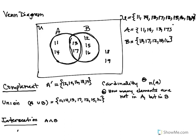Then we have intersection. A intersect B means tell me what they share — what they have in common. Intersection is the 'and' of them, union is the 'or' of them, and complement is the 'not' of them. So 'and' means must be in both — what are they sharing? They share 13 and 17, right here in the intersected section.